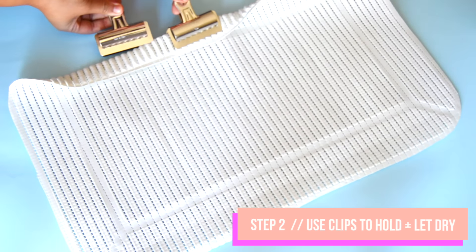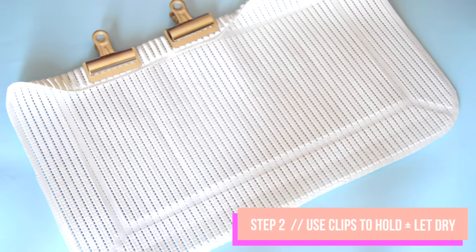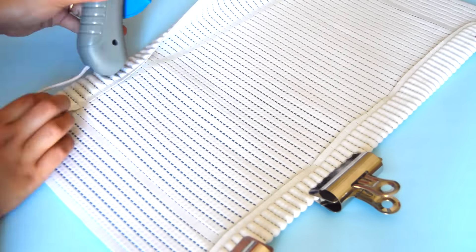For step 2, use the clips to hold down the sides you just glued and allow that to dry for about 5-8 minutes. The great thing about using hot glue is that it dries fairly fast so this is definitely an easy and quick DIY.